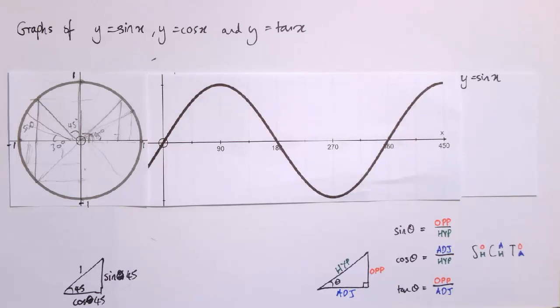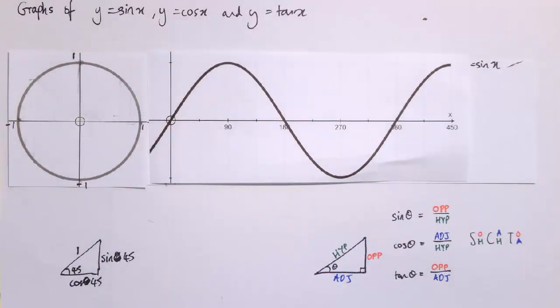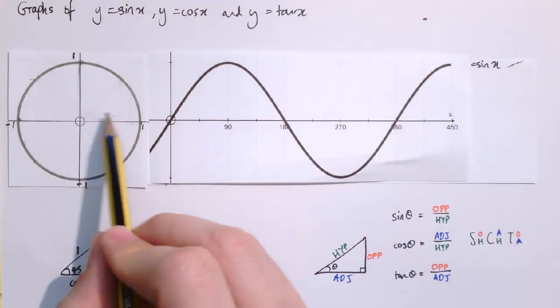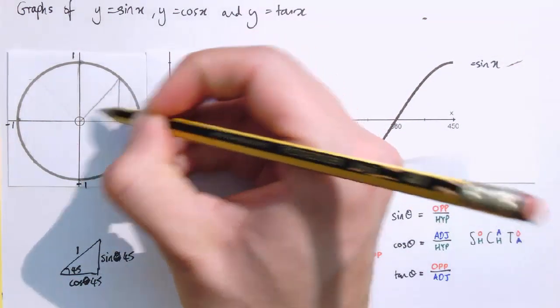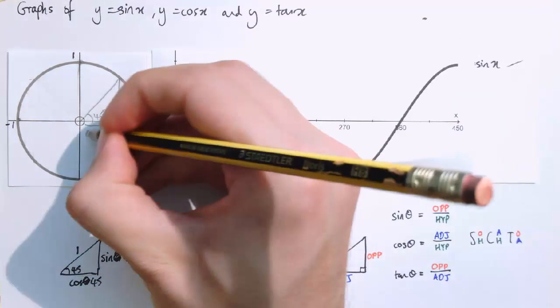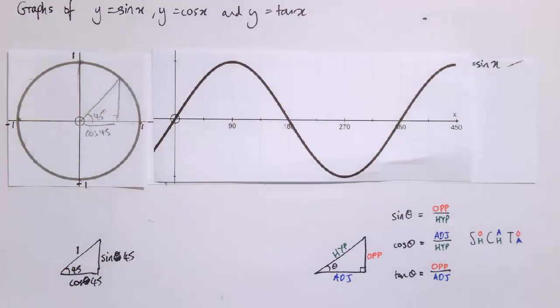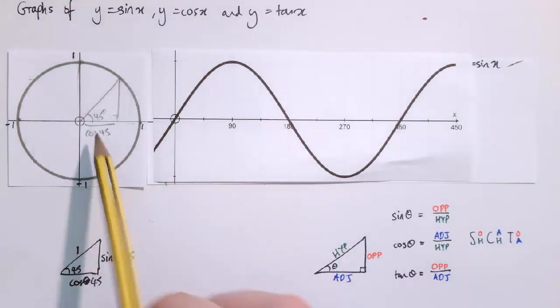And now we could do exactly the same thing for cos. So again, cos is neatly defined between 0 and 90 by these triangles again. And the cosine of the angle is just the adjacent side this time. So rather than the y-coordinate, it's the x-coordinate. If I look at 45 degrees, cos is going to be this distance here. So it's going to be cos of 45. And by doing exactly the same sort of thing, going around and sweeping up these values, we can think about different values.